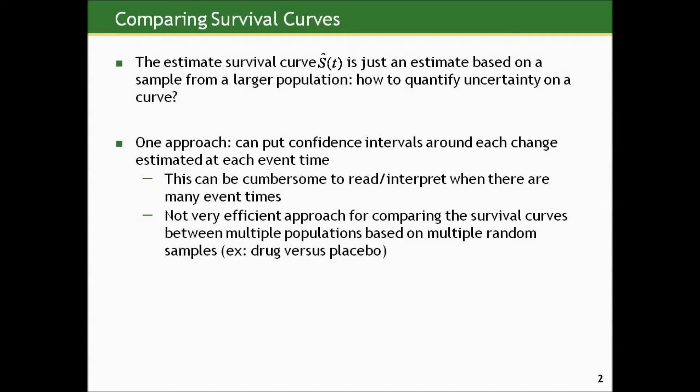The estimated survival curve, S-hat of t, is just an estimate based on a sample from a larger population. How do we quantify uncertainty on a curve? One approach is we can put confidence intervals around each change in the curve estimated at each event time.